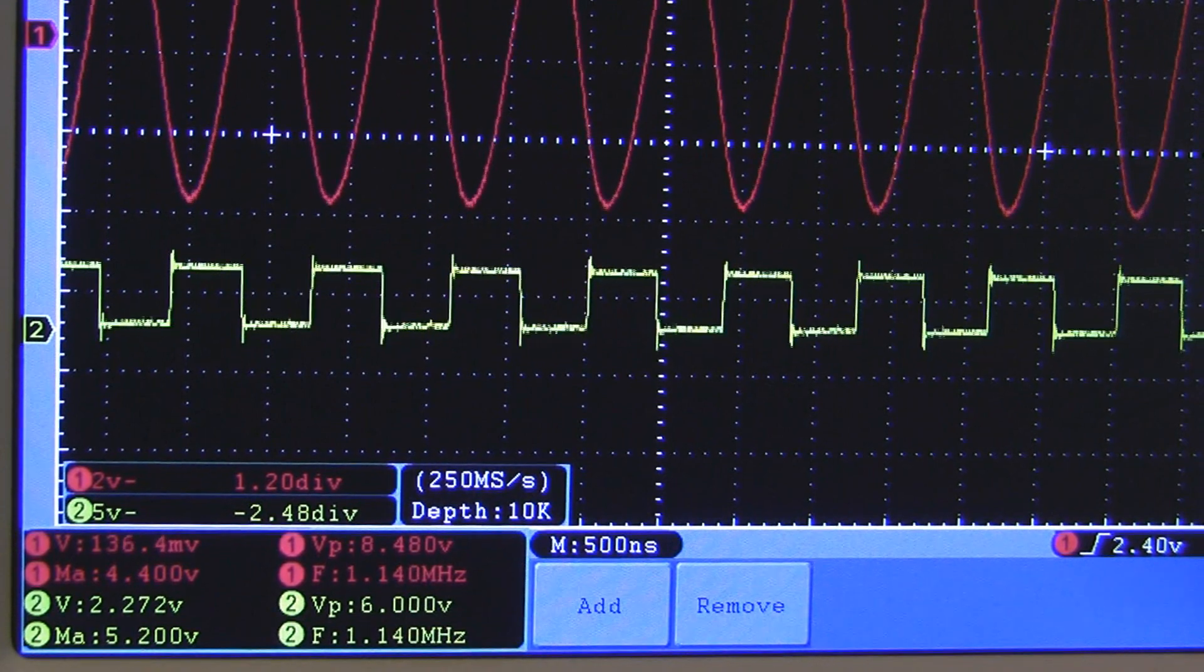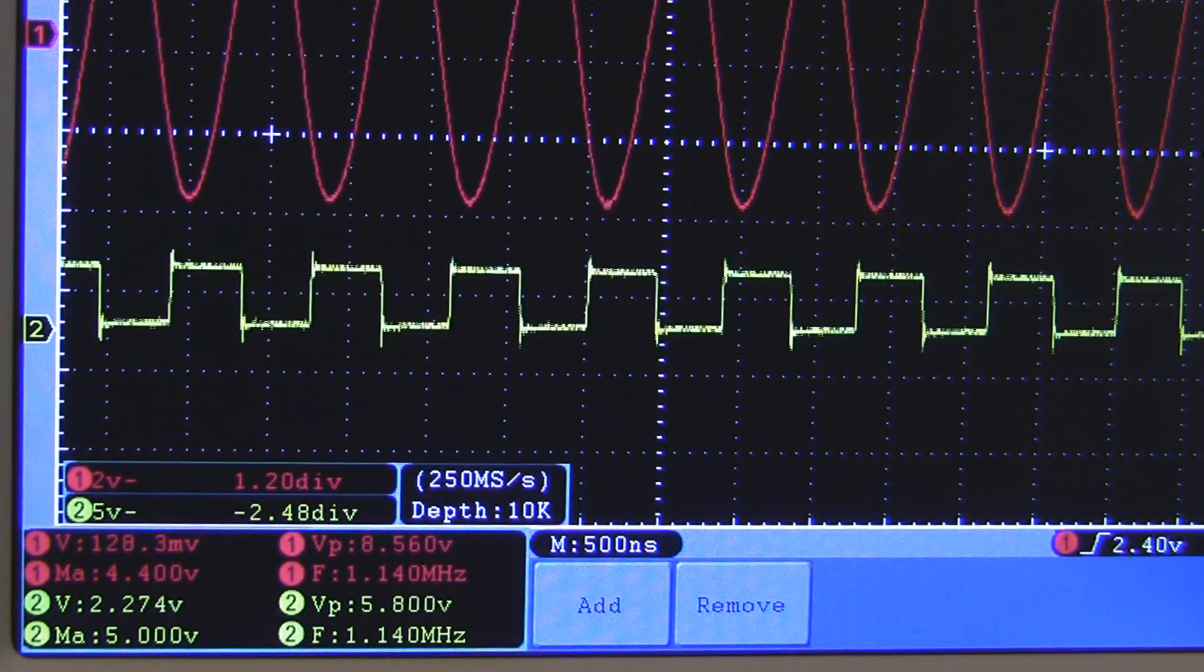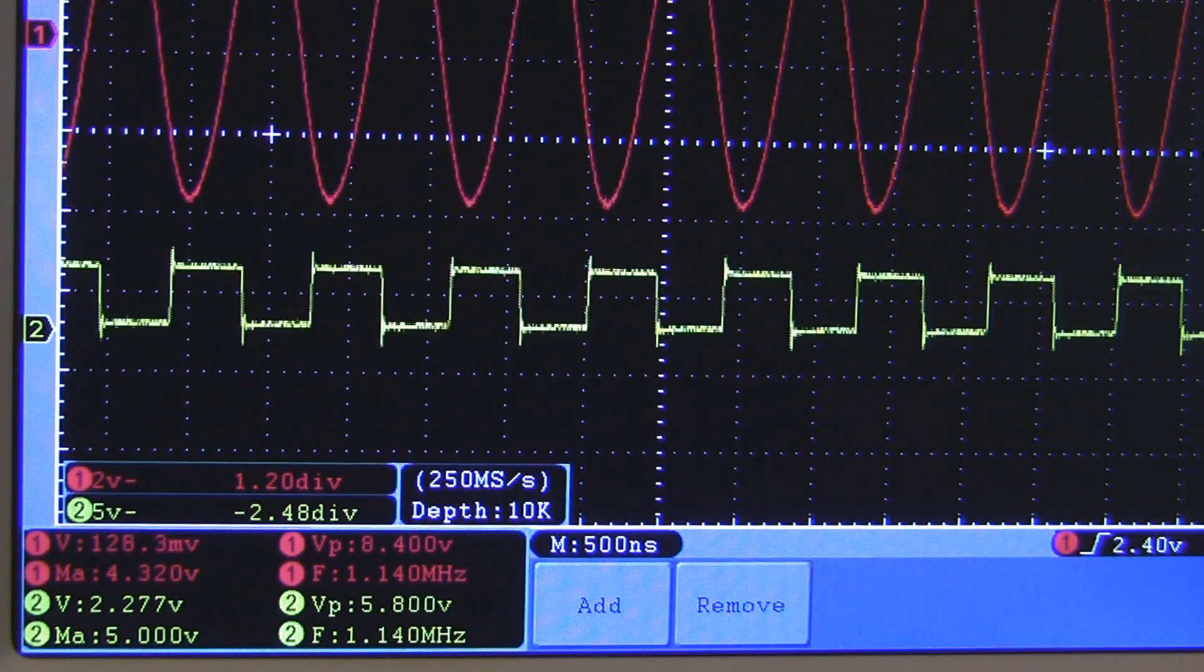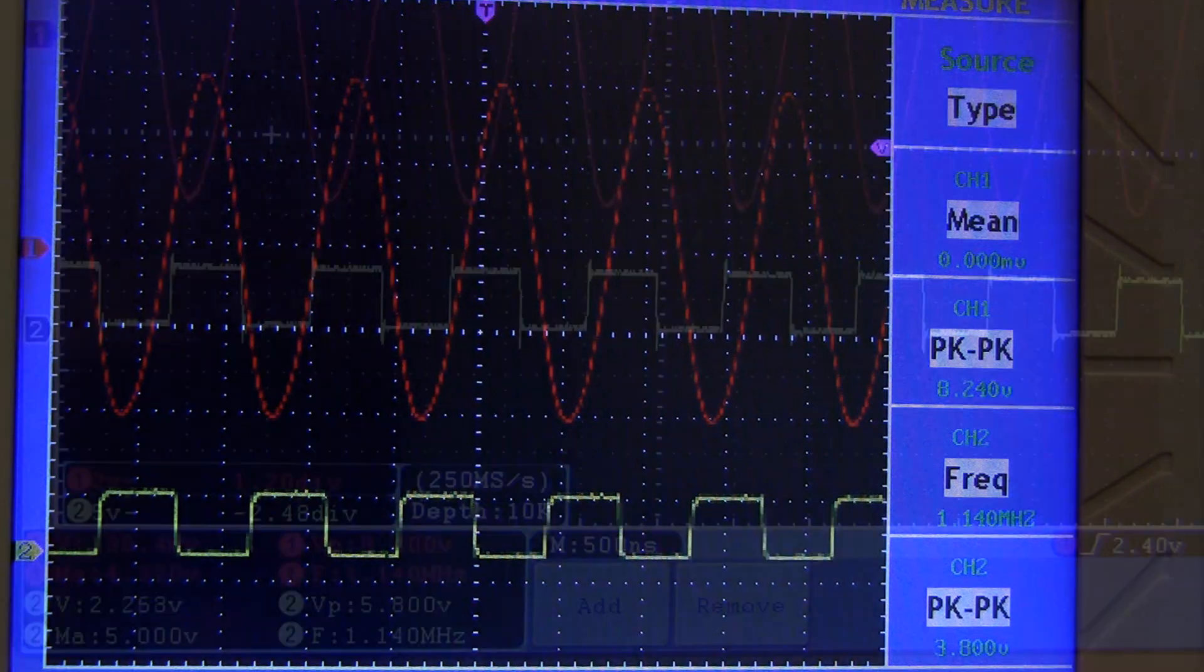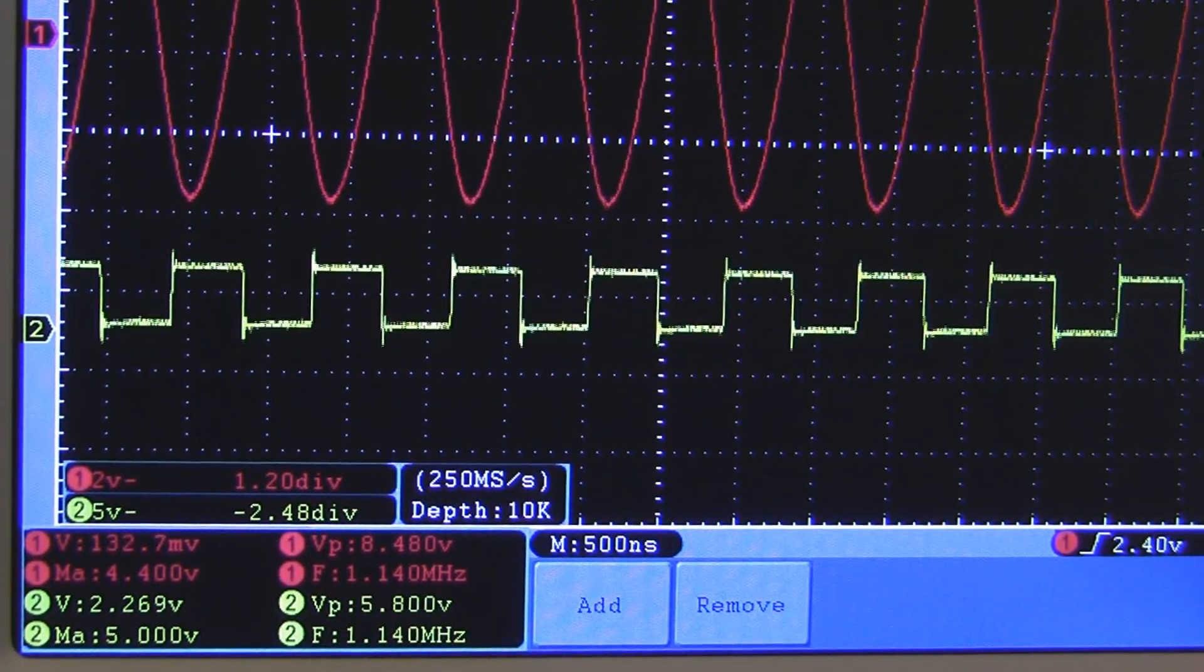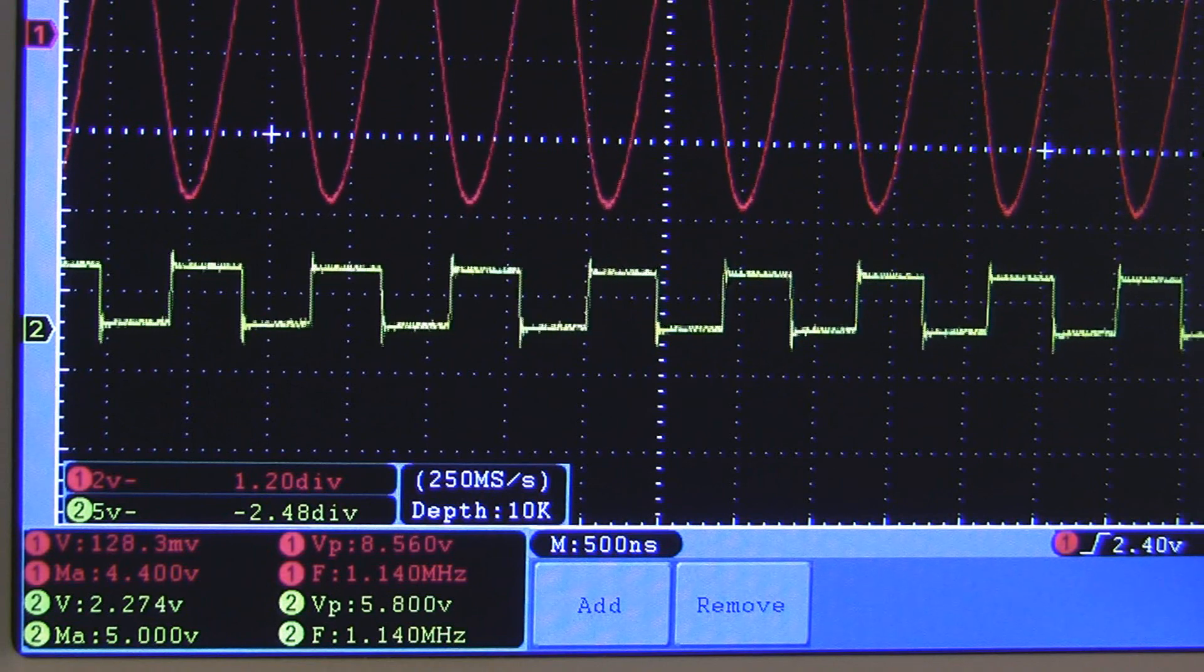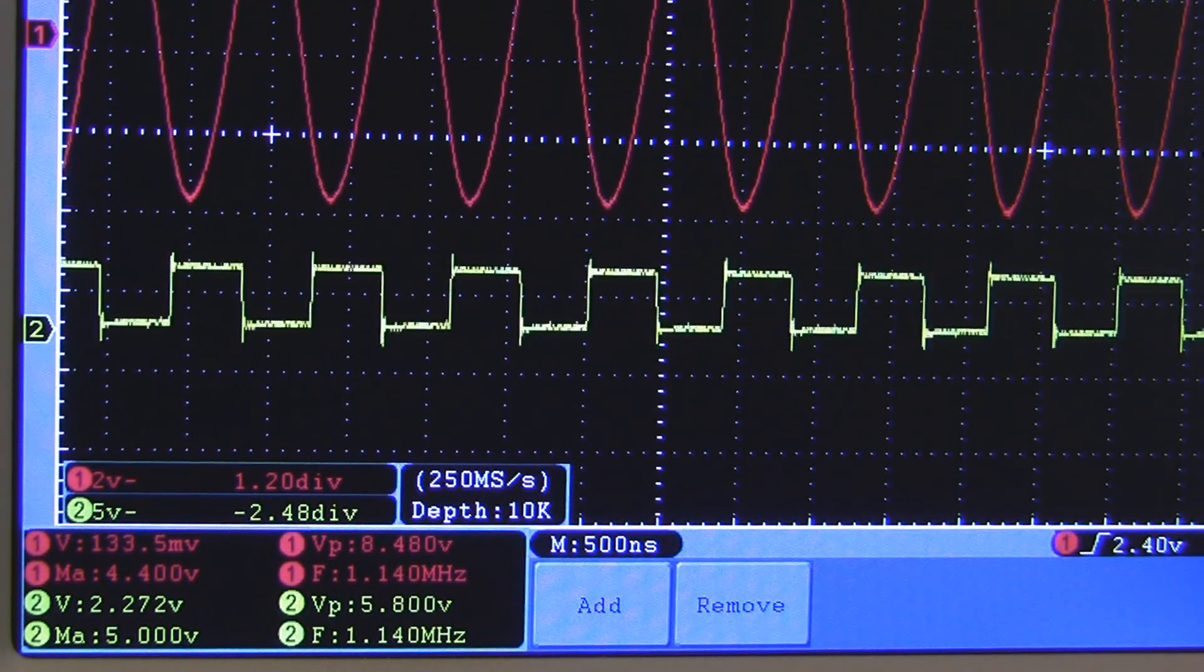Now one of the reasons why I recommend digital storage scopes to people is that they can automatically do measurements for you. The 6062 can do 8 automatic measurements at once, as opposed to the usual 4 measurements, and that's extremely useful to have when you're using both channels. Right now I'm measuring RMS voltage, peak to peak voltage, maximum voltage and frequency on both channels at the same time.